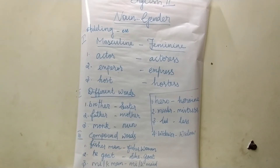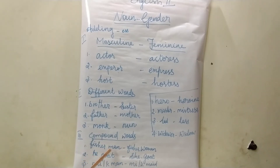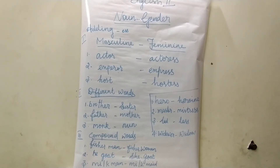The third type: by the formation of compound words — that is, by adding another word to form the feminine gender. Examples: fisherman–fisherwoman, he-goat–she-goat, milkman–milkmaid, grandson–granddaughter, manservant–maidservant, stepfather–stepmother, grandfather–grandmother, granduncle–grandaunt, landlord–landlady, stepson–stepdaughter.